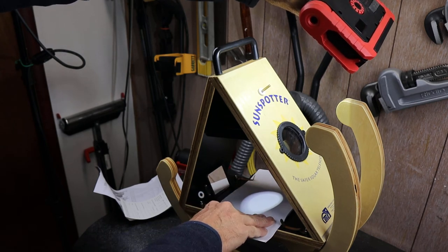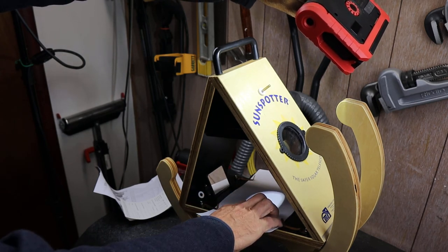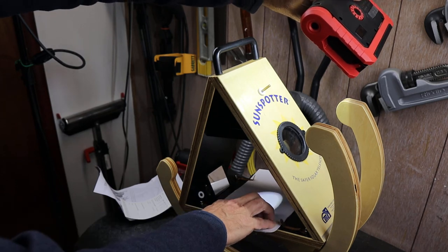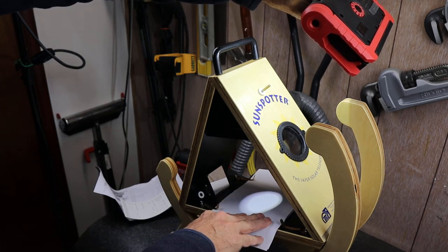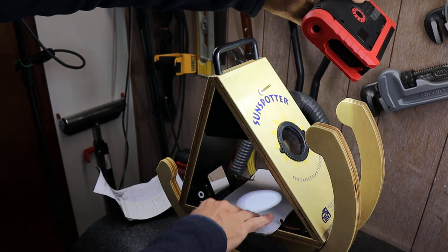If there are sun spots if you wiggle the scope just a little bit you'll see that the sun spots stay with the circle and not with the scope. So you're actually looking at those and there are a few out there last time I checked.